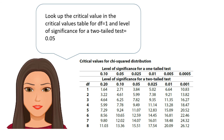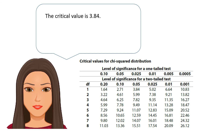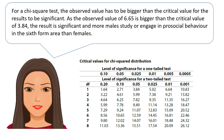Pause here to look at this carefully. The critical value is 3.84. For the chi-squared test, the observed value has to be bigger than the critical value for the results to be significant. As the observed value of 6.65 is bigger than the critical value of 3.84, the result is significant and more males study or engage in pro-social behaviour in the sixth form area than females — at least for this set of data.